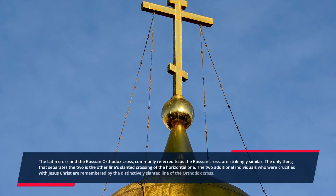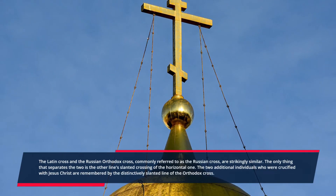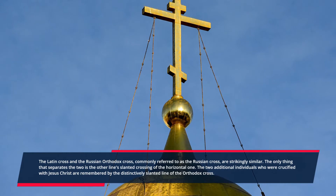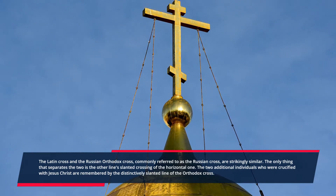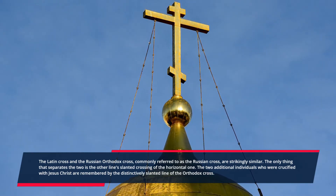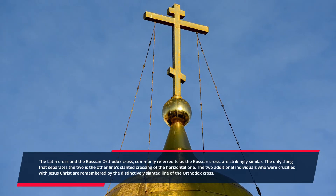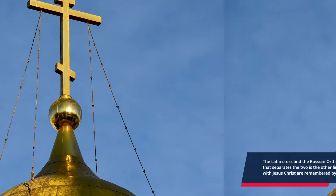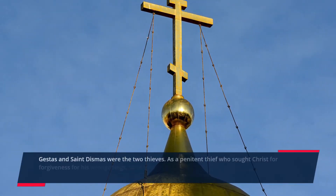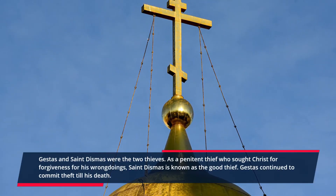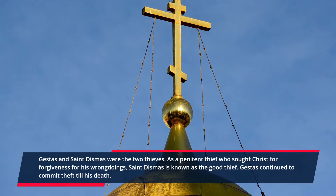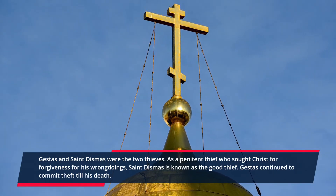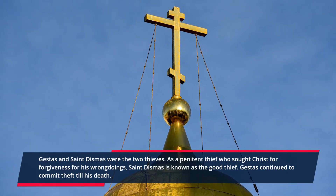Number four: the Orthodox Cross. The Latin cross and the Russian Orthodox Cross are strikingly similar. The only difference is an additional slanted line crossing the horizontal one. The slanted line commemorates the two additional individuals crucified with Jesus Christ. Gestas and Saint Dismas were the two thieves. Saint Dismas is known as the good thief, who sought Christ for forgiveness, while Gestas continued to commit theft until his death.